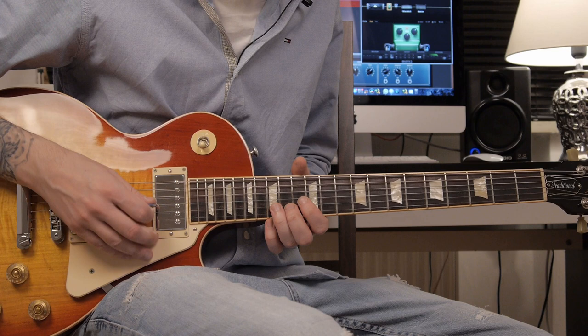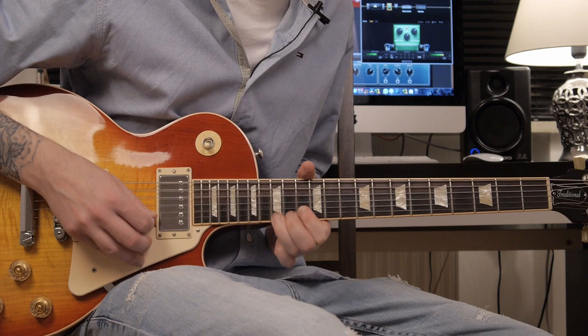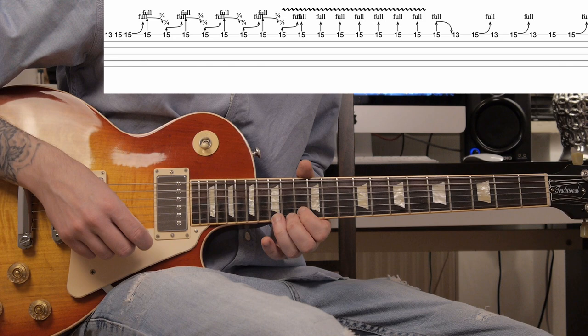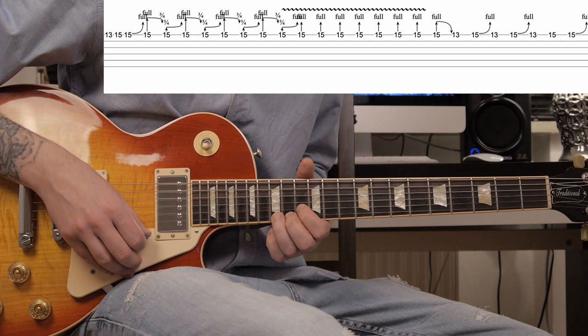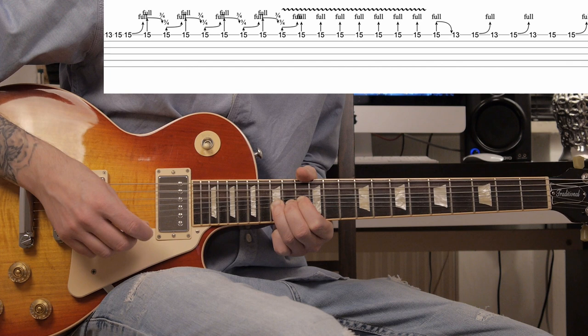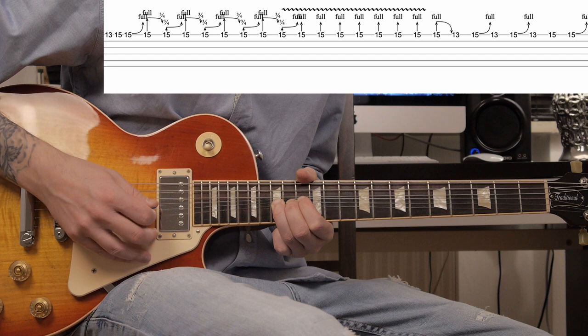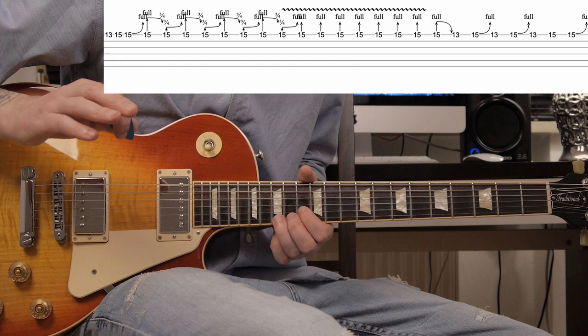So, he played something like... That's fret 13 and 15 on the high E string. A full-tone bend on fret 15 on the high E string. Then you release the note a quarter tone, and push it back to the full tone. Release it, quarter tone. Push it back. That's typically Freddie King. That's why it's a signature lick.